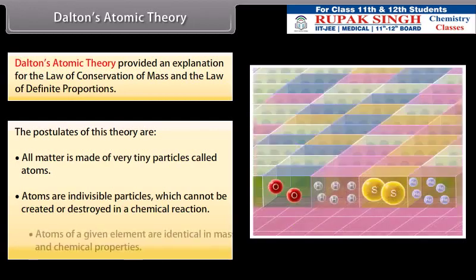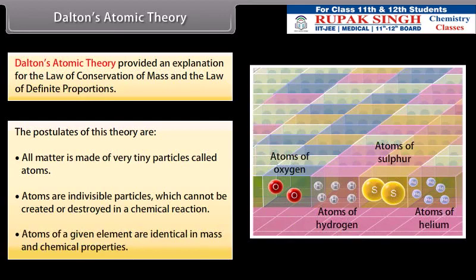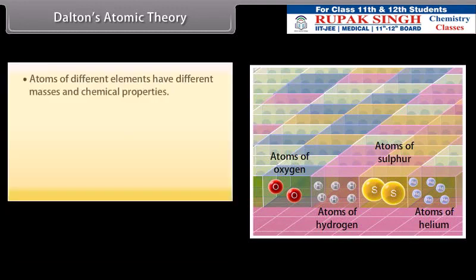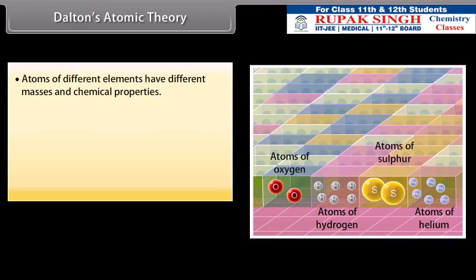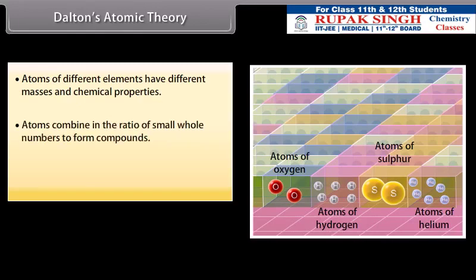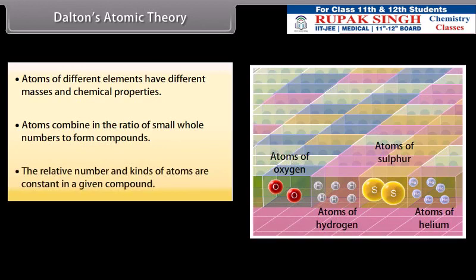3. Atoms of a given element are identical in mass and chemical properties. 4. Atoms of different elements have different masses and chemical properties. 5. Atoms combine in the ratio of small whole numbers to form compounds. 6. The relative number and kinds of atoms are constant in a given compound.